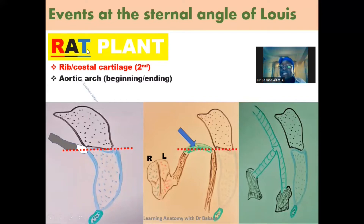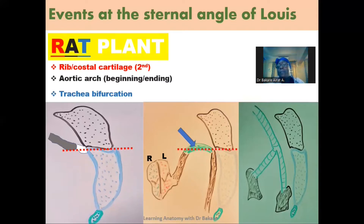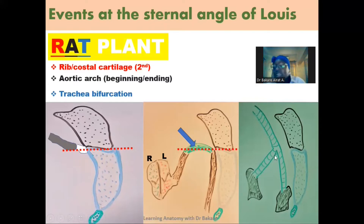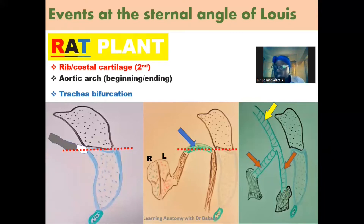The next letter is T, and T is trachea bifurcation. The trachea, highlighted in green, is a single pipe that runs down and later bifurcates at the carina region into two because we have two lungs. The level where it bifurcates into the right primary bronchus and the left primary bronchus to supply air into the two lungs also tallies with the level of the Sternal Angle of Louis.